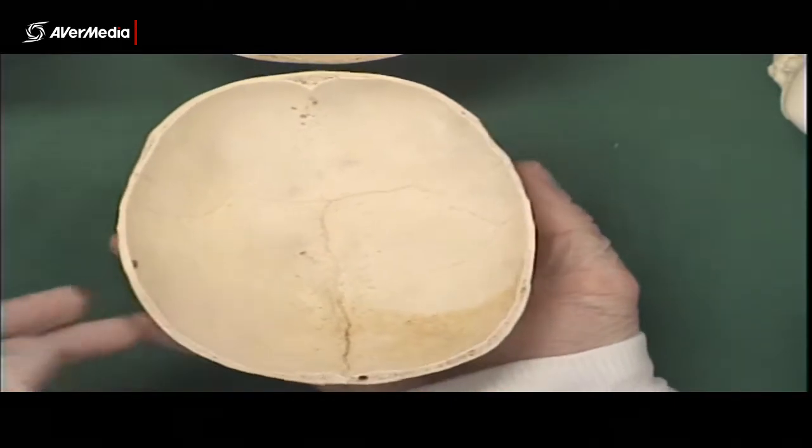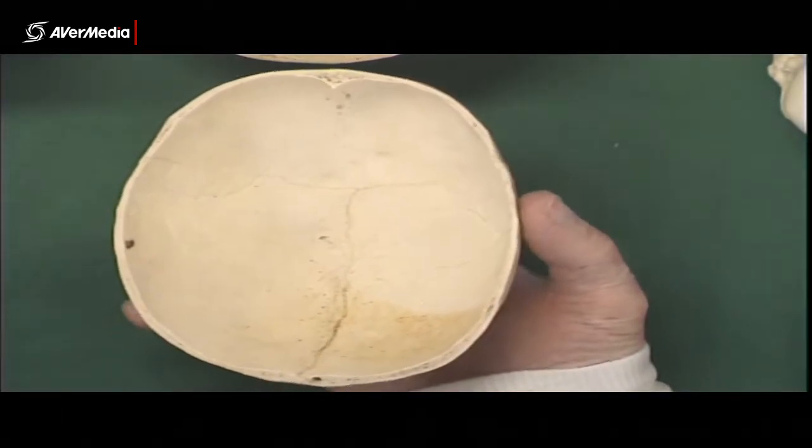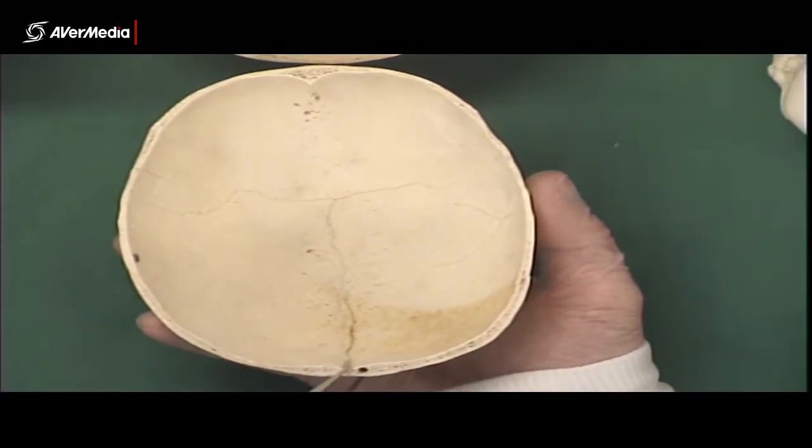Then if we look at an internal view of the calvaria, what we can see here is frontal and then parietal bones. Hopefully you can see there's a little notch here, a little depression.